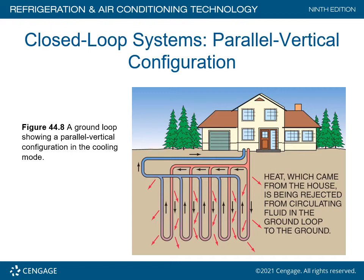Closed loop systems in parallel vertical configuration in cooling mode: heat from the house is rejected from the circulating fluid into the ground loop. There appear to be two separate loops — one loop gives up heat from the house to the ground, while another loop picks up and cools the water. This cooled water can then be circulated as chilled water back into the structure to cool the house.